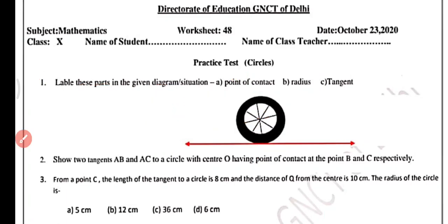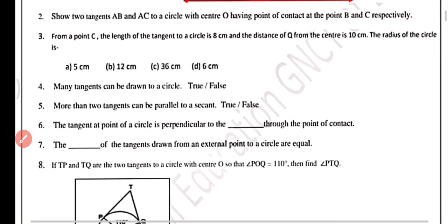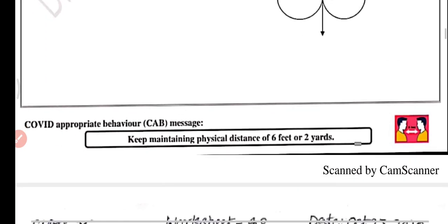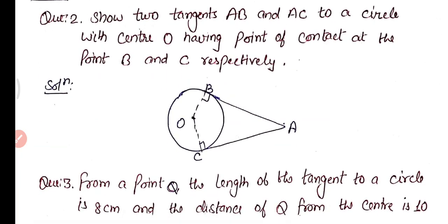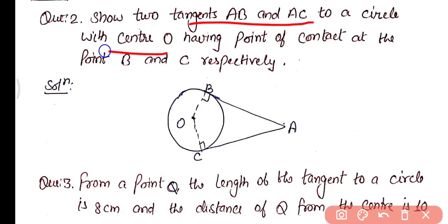Now we have some more practice questions. Question number two: two tangents AB and AC to a circle with center O having points of contact at B and C respectively. We take a point A exterior to the circle and draw two tangents AB and AC to the circle with points of contact B and C respectively.